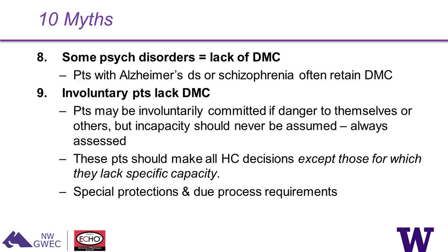Myth eight: some psychiatric disorders basically determine that the patient lacks capacity. This is not the case. Even in surveys, physicians still misunderstand this and assume that if a patient has Alzheimer's disease or schizophrenia, they lack capacity — that is absolutely not the case. Acute psychosis is what would lead to a lack of capacity, and we always return to the fact that it depends on the specific decision that needs to be made.